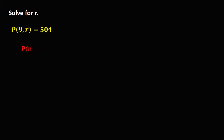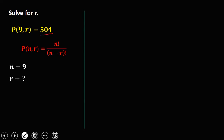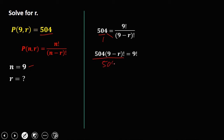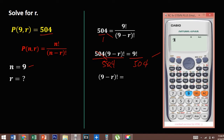For the next problem, N equals 9 and R is the unknown. The given is equal to 504. So 504 equals 9 factorial over (9 minus R) factorial. Then cross multiplication: 504 times (9 minus R) factorial equals 9 factorial. Then divide both sides by 504.